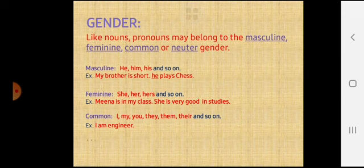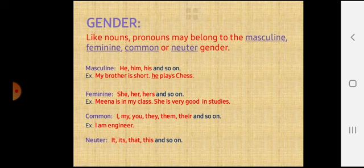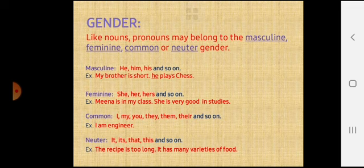Last is neuter. Neuter gender includes the words it, its, that, this and so on. For example, the recipe is too long. It has many varieties of food. In this sentence, recipe is a neuter gender. And in place of recipe, I have used the word it. So it is also a neuter gender.